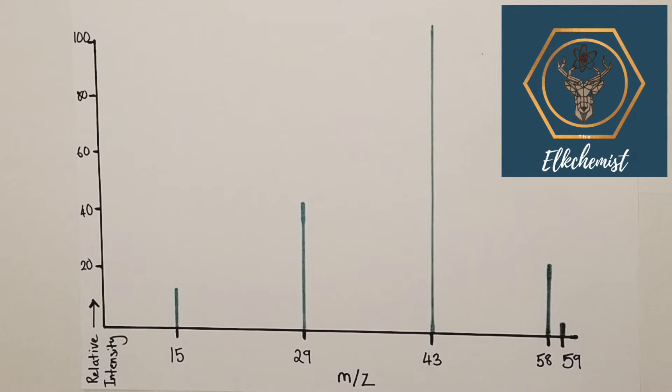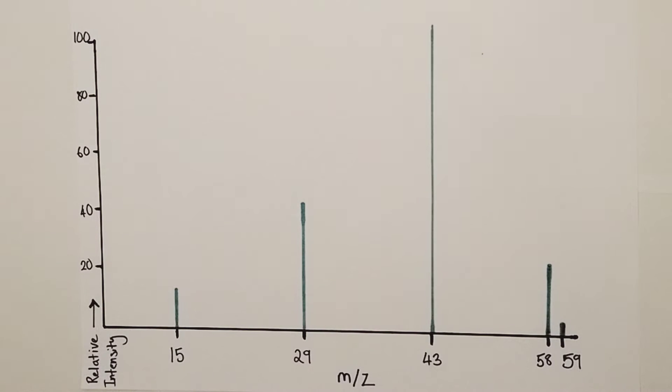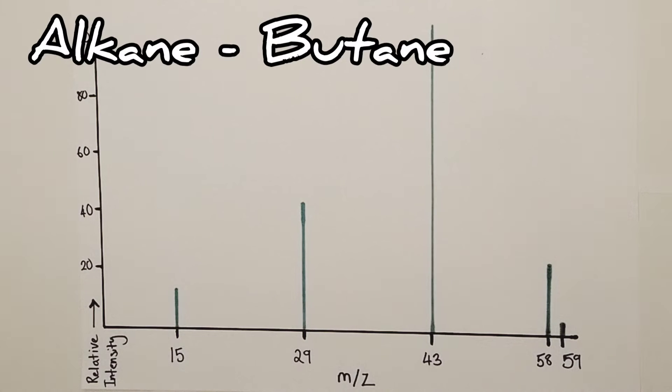Hi there, welcome to this Alchemist's chemistry video looking at mass spectra. This will be the first in a series of videos looking at how to interpret mass spectra at A-level. This particular example is going to look at the alkane butane.